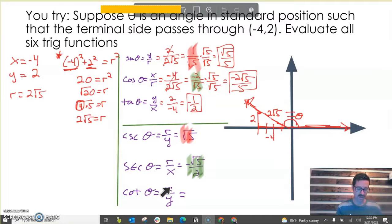And lastly, cotangent is x over y. I can take the reciprocal of tan theta. That's just -2.